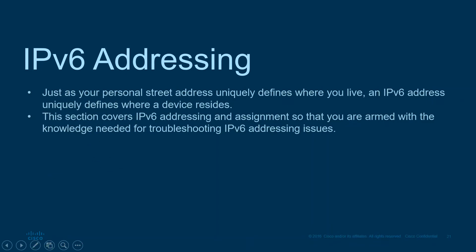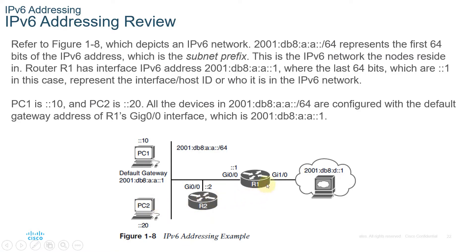Now let's recap IPv6 addressing. On this diagram depicting an IPv6 network, 2001:DB8:AA::/64 represents the first 64 bits in the IPv6 addresses — the subnet prefix — which is the IPv6 network the nodes reside in. Router one has interface IPv6 address 2001:DB8:AA::1 on GI0/0, where the last 64 bits — ::1 in this case — represent the interface host ID. PC1 is at ::10 and PC2 is at ::20. All devices in the 2001:DB8:A:A::/64 network are configured with the default gateway address of R1's G0/0 interface, which is 2001:DB8:A:A::1.